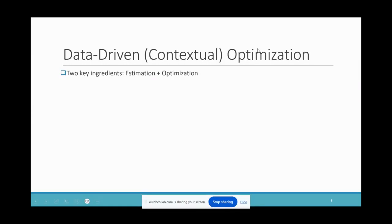There are two key ingredients to solving data-driven optimization: in addition to the optimization step, we need to estimate the randomness by incorporating data information. How we handle the estimation leads to different approaches — particularly the following three mainstream approaches I will discuss today.